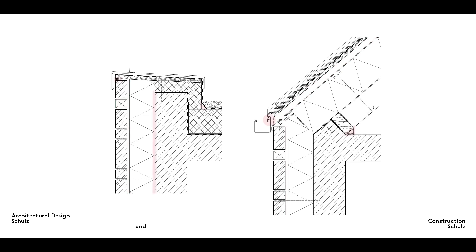Another important feature that must be included in 1:5 scale drawings is the connecting joints between different components and how these connections are made. They may take the form of gaps designed to compensate for tolerances, or closed, permanently elastic expansion joints.